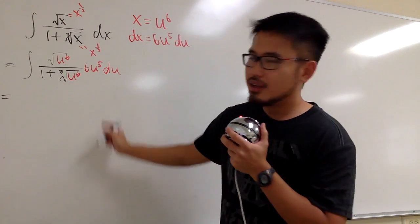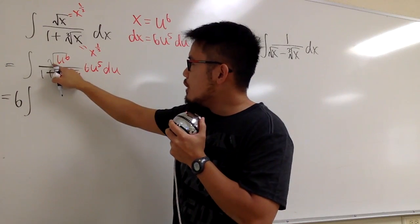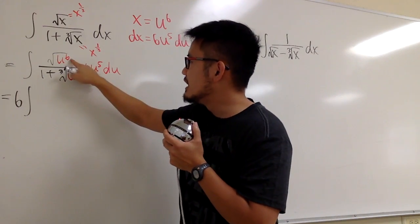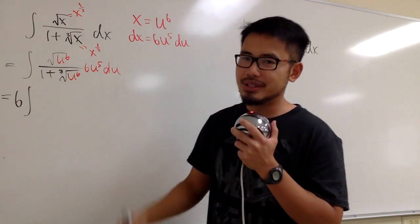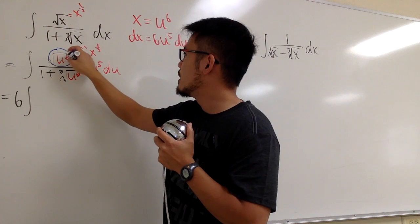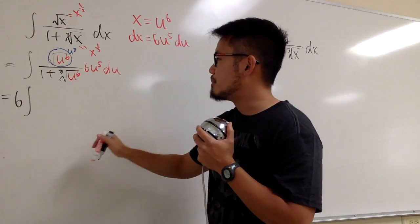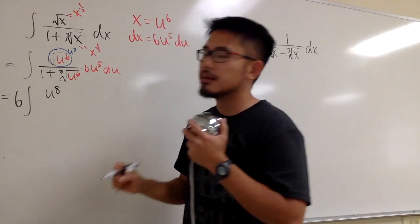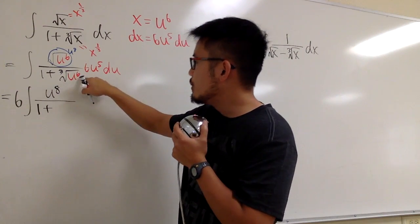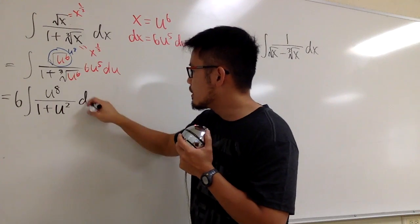Now let's fix this. We take the 6 out front. On the top, the square root of u to the 6th is u to the 3rd power — you divide 6 by the index 2 to get 3. Combined with u to the 5th power from dx, we get u to the 8th power on top. On the bottom, the cube root of u to the 6th: divide 6 by 3 to get u squared. So we have 6 times the integral of u to the 8th over 1 plus u squared, du.